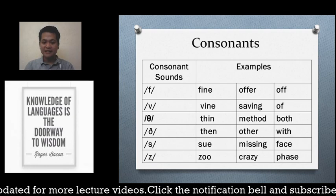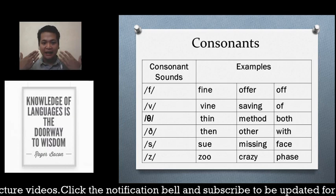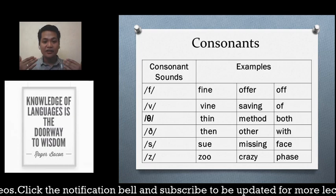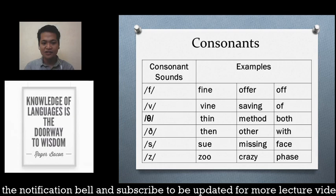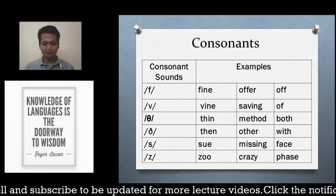Next is the soft 'th' /θ/ sound. Most Filipinos mispronounce this — to produce it correctly, your tongue must be placed between your upper and lower teeth with air flowing out. Examples: thin, method, both.